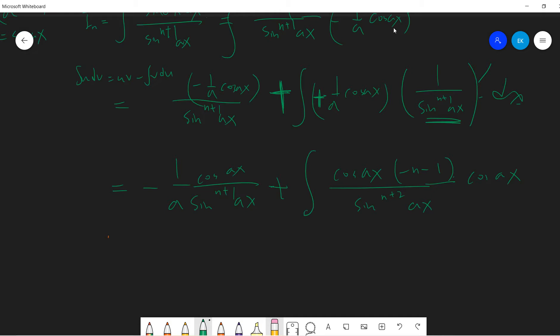Okay, so it's negative 1 over a cosine ax, sine^(n+1) ax, plus what? Plus, minus 1 negative n, so 1 over sine ax. So cosine squared is 1 minus sine squared ax, right? So this is sine^(n+2) ax.